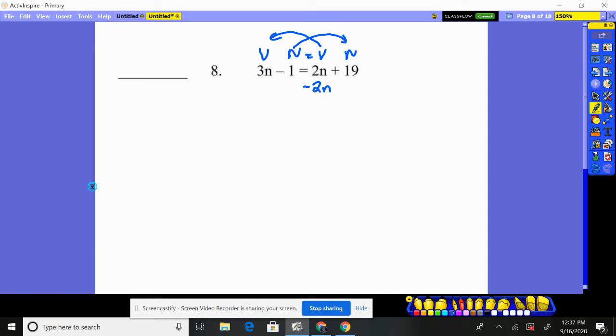So I'm going to subtract 2n from both sides of the equal sign. This leaves me 1n minus 1 equals, that went away because it moved to the other side, equals 19. Now, I need to move my 1 over. So I'm going to add 1 to both sides, n equals 20 for number 8.